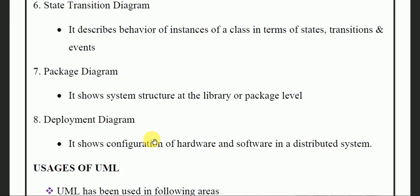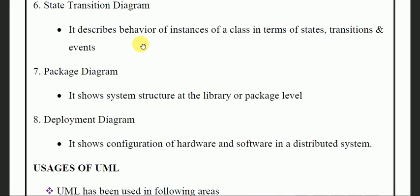State transition diagram — it describes the behavior of instances, meaning your objects. We see in which way any particular object is behaving. The state transition diagram describes the behavior of instances of a class in terms of states, transitions, and events. If any particular state is on or off, that is the transition, and which particular event causes that transition from one state to another is the event.